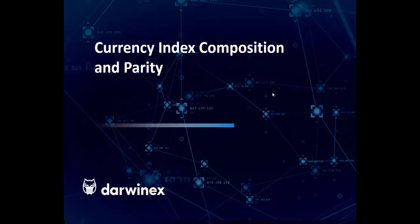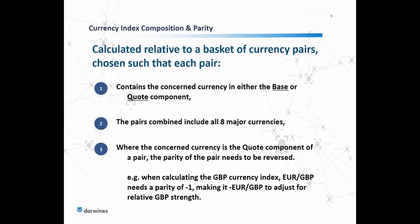In terms of composition and parity — what goes into an index and in what proportion — each index is calculated relative to a basket of currency pairs. Whether it's a major currency index or a custom index, that basket is chosen so that each pair contains the concerned currency in either the base or quote component. The pairs combined include all eight major currencies. Where the concerned currency is the quote component of a pair, the parity of that pair needs to be reversed.